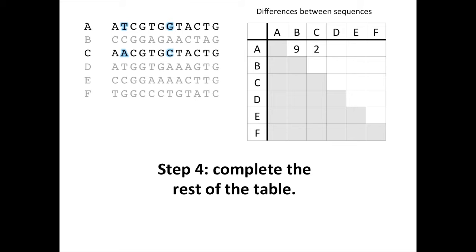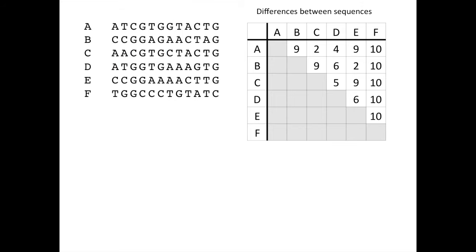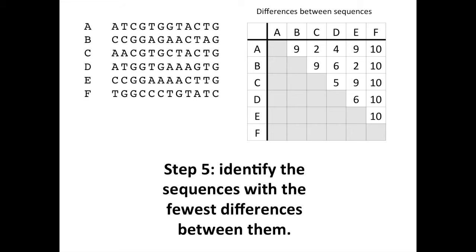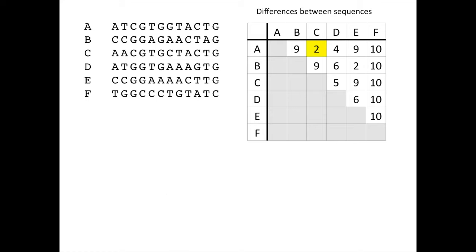This is our next step, and this is what the completed table looks like. With the table completed, we can move to the next step, which is to use the table to identify the sequences with the fewest differences between them. We will infer that these are the sequences that are the most closely related to one another. In our table, we see that the sequences with the fewest differences are A and C with only two differences, as well as B and E, that also only have two differences between them.